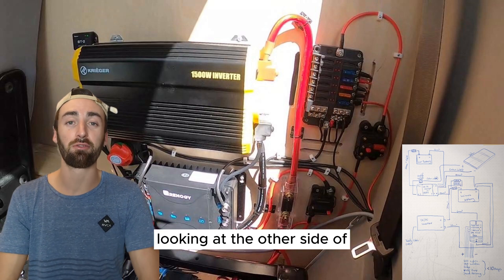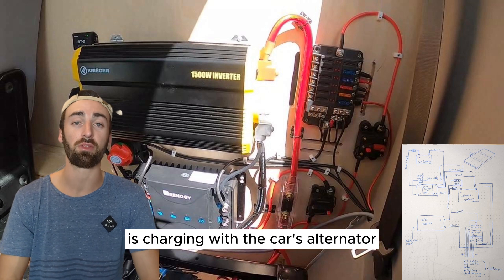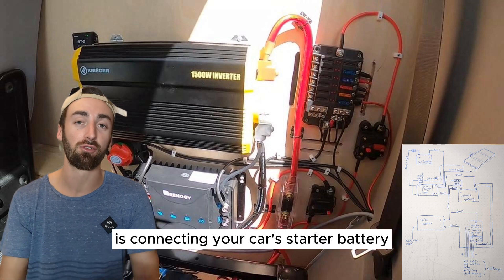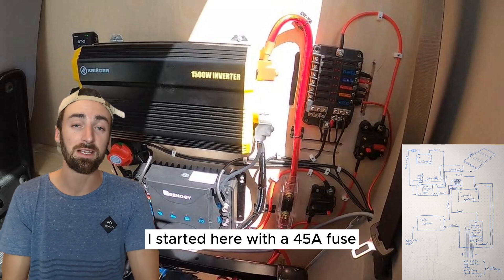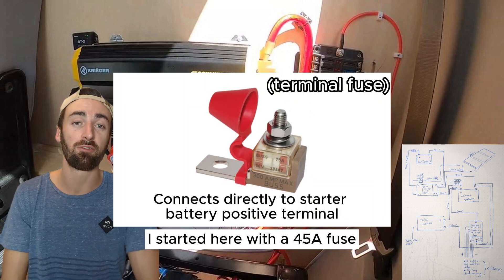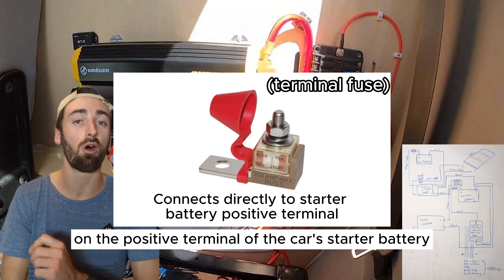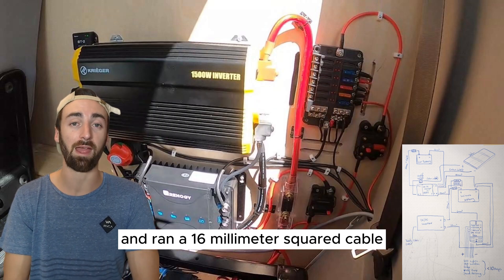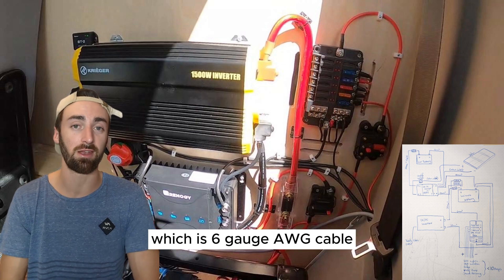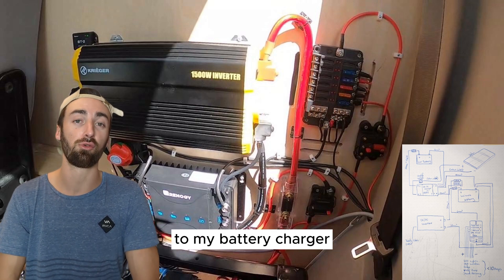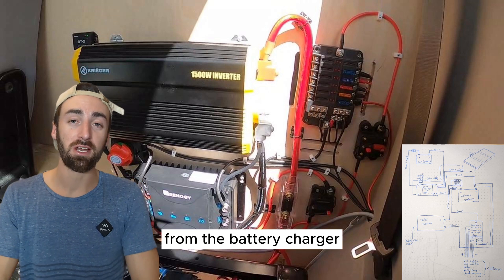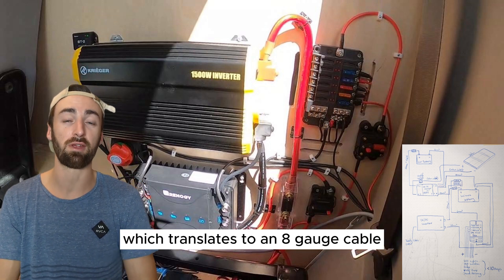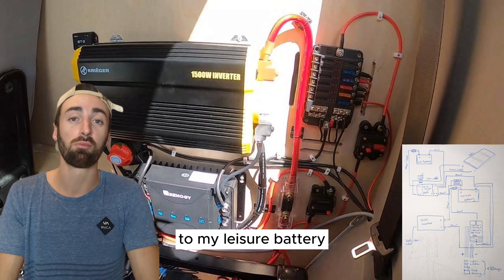Looking at the other side of the battery charger is charging with the car's alternator. So what that actually means is connecting your car's starter battery to your leisure battery charger. I started here with a 45 amp fuse on the positive terminal of the car's starter battery and ran a 16 millimeter squared cable which is 6 gauge AWG cable to my battery charger. From the battery charger I then ran a 10 millimeter squared cable which translates to an 8 gauge cable to my leisure battery.